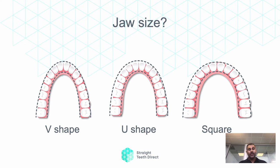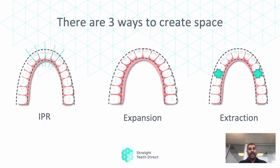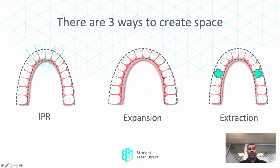We naturally have a certain amount of space in our jaw and there are three ways to create space before aligning teeth. One is IPR — interproximal reduction — where a dentist drills between the teeth to create space. The issue is the teeth can end up too skinny and hard to clean. Another way is through expansion, where the straightening process pushes the teeth outwards to make a wider smile — a nicer, non-invasive way to improve the smile.